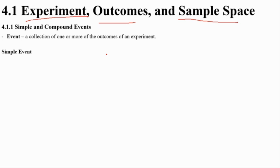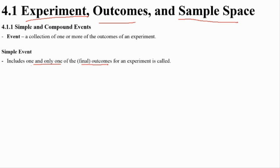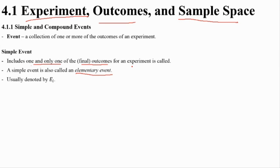A simple event includes only one final outcome. It is also called an elementary event. We denote each simple event as e1, e2, e3, and so on — each representing one specific outcome from all possible outcomes.